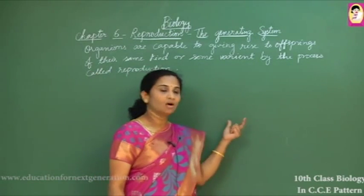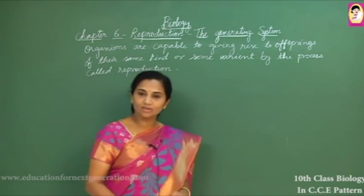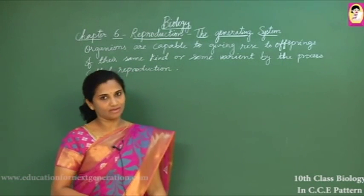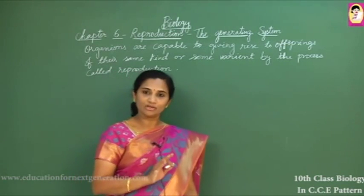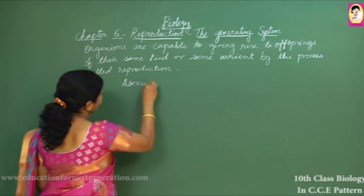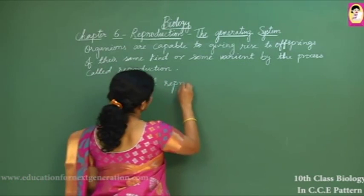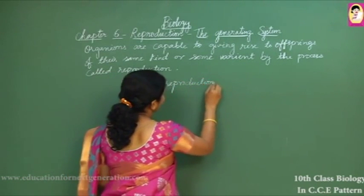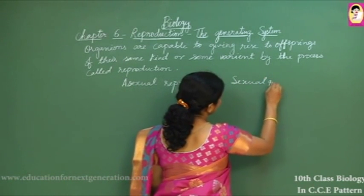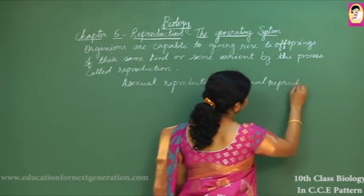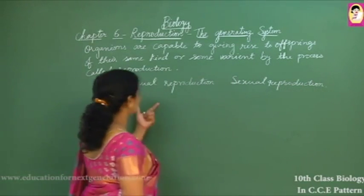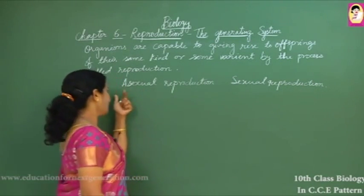All living organisms, whether they are unicellular or multicellular, adopt different methods of reproduction. Broadly, we classify reproduction into two types, which we call sexual reproduction and asexual reproduction.